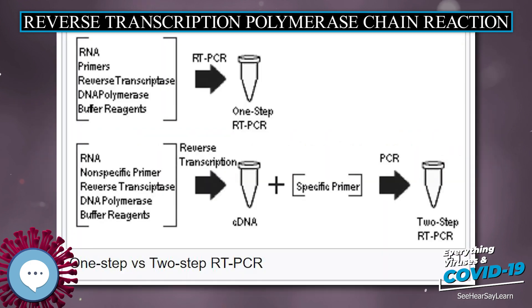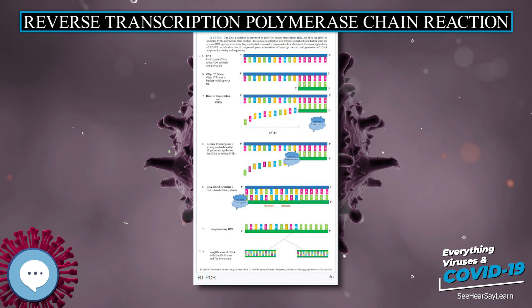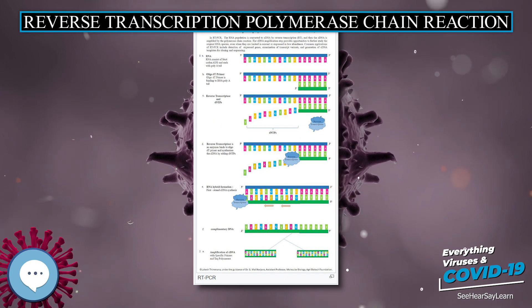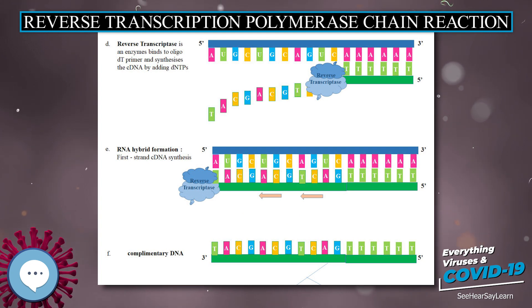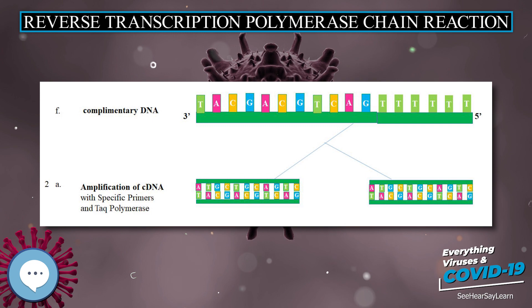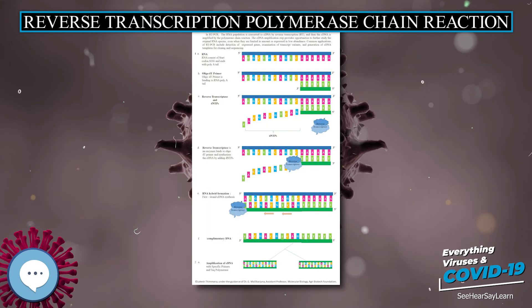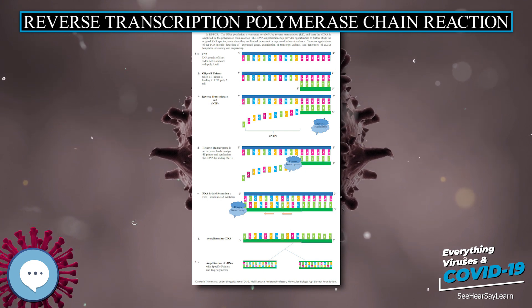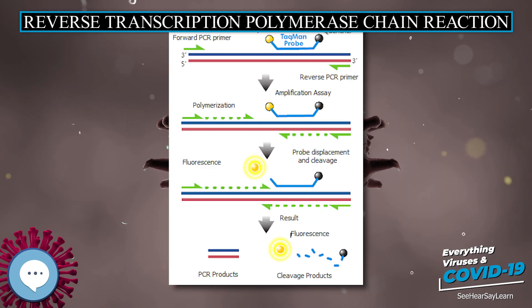TaqMan probes are oligonucleotides with a fluorescent probe attached to the 5-end and a quencher to the 3-end. During PCR amplification, these probes hybridize to target sequences in the amplicon, and as polymerase replicates the template with TaqMan bound, it cleaves the fluorescent probe due to 5' nuclease activity. The close proximity between the quencher and the fluorescent probe normally prevents fluorescence through FRET; decoupling results in increased fluorescence intensity proportional to the number of probe cleavage cycles. Although well-designed TaqMan probes produce accurate results, they are expensive and time-consuming to synthesize when separate probes must be made for each mRNA target.